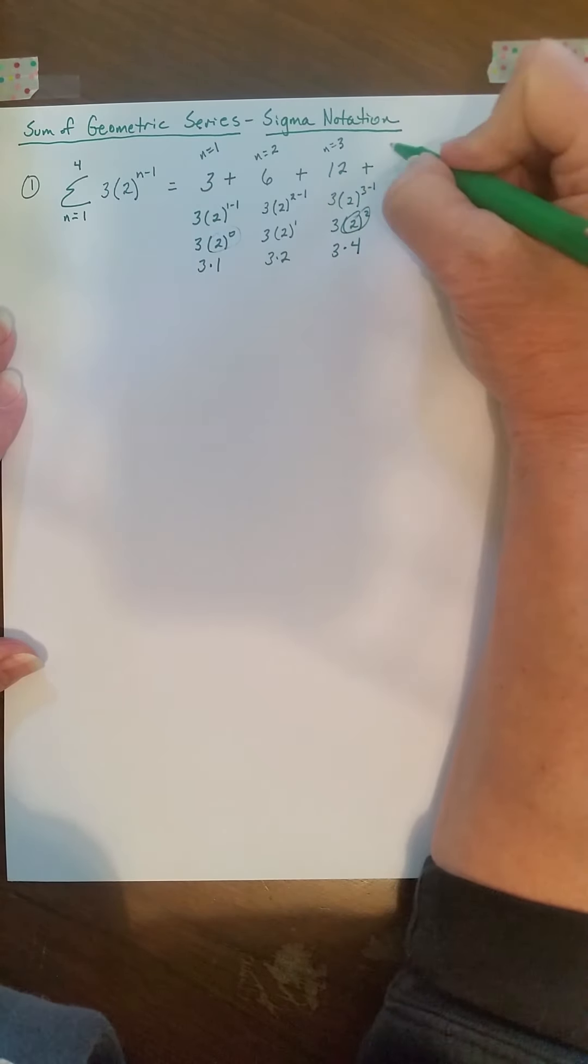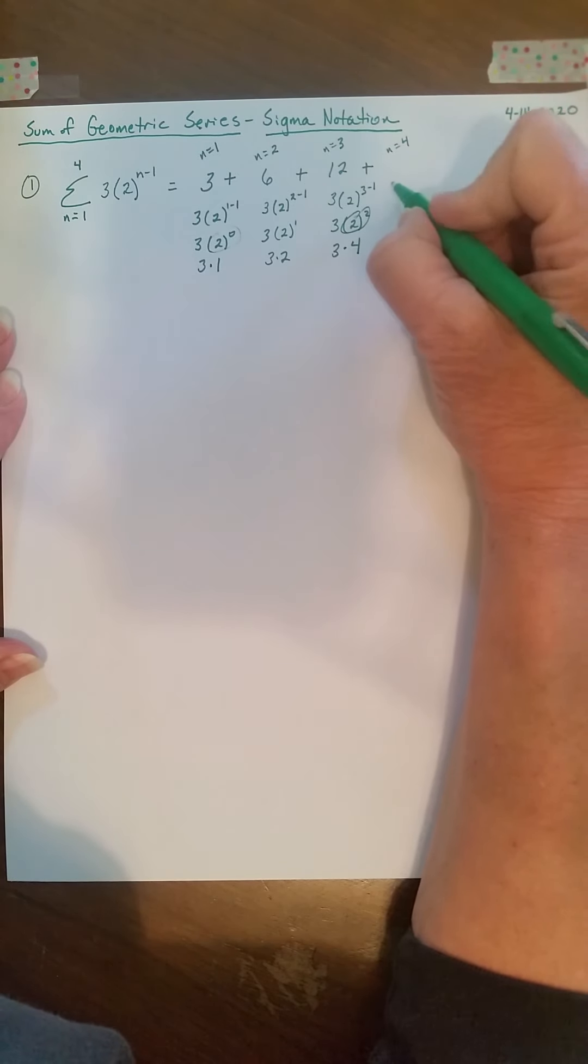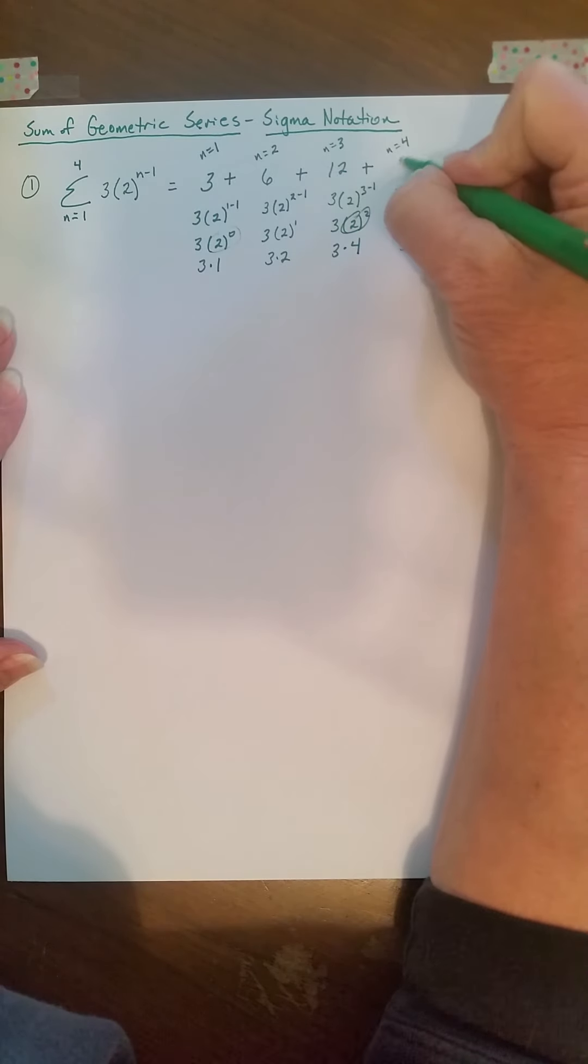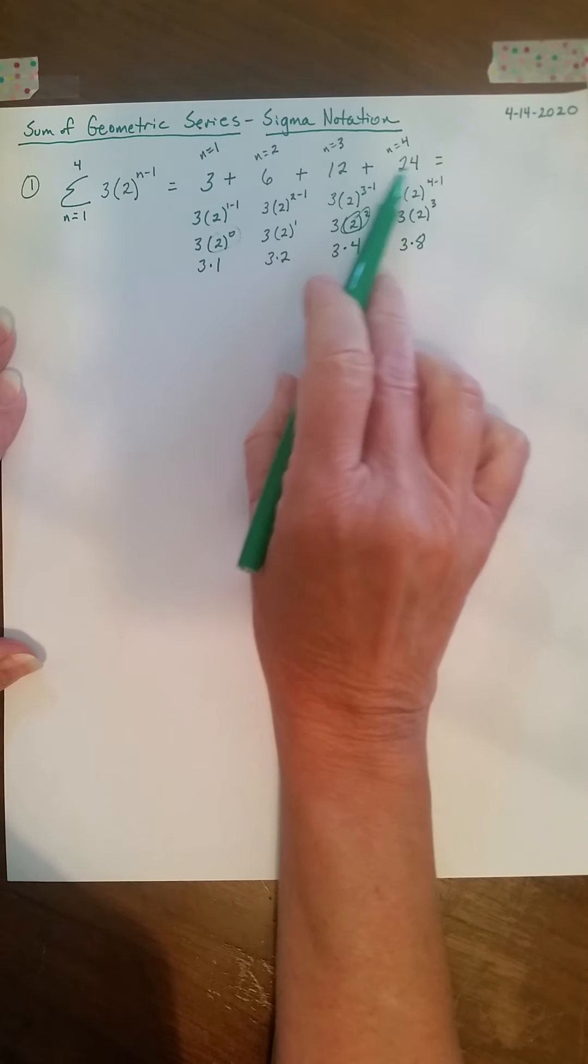Plus, when I put in n equals 4, we have 3 times 2 to the 4 minus 1, so that's 3 times 2 to the 3rd, so that's 3 times 2 to the 3rd is 8. 3 times 8 is 24. Okay, so we've got 3, 6, 12, 24.